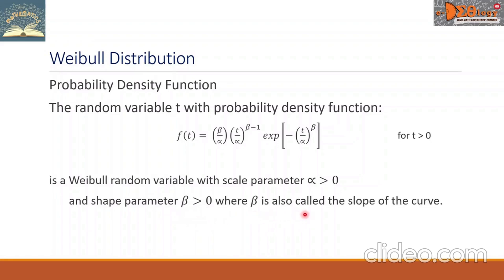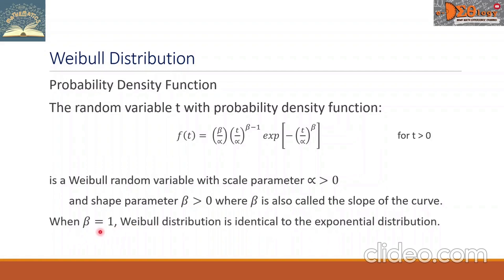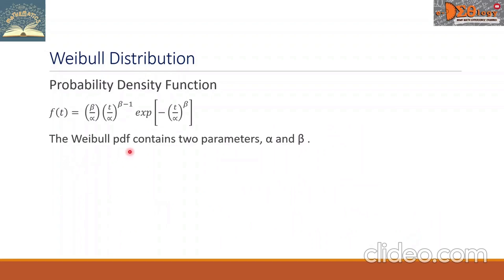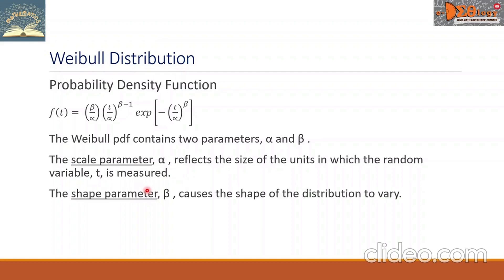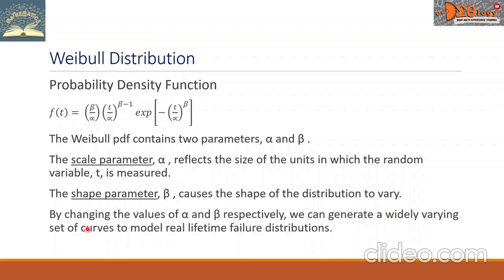Beta is also called the slope of the curve. When beta equals 1, the Weibull distribution is identical to the exponential distribution. The Weibull PDF contains two parameters, alpha and beta. The scale parameter alpha reflects the size of the units in which the random variable t is measured. The shape parameter beta causes the shape of the distribution to vary. By changing the values of alpha and beta respectively, we can generate a widely varying set of curves to model real-lifetime failure distributions.